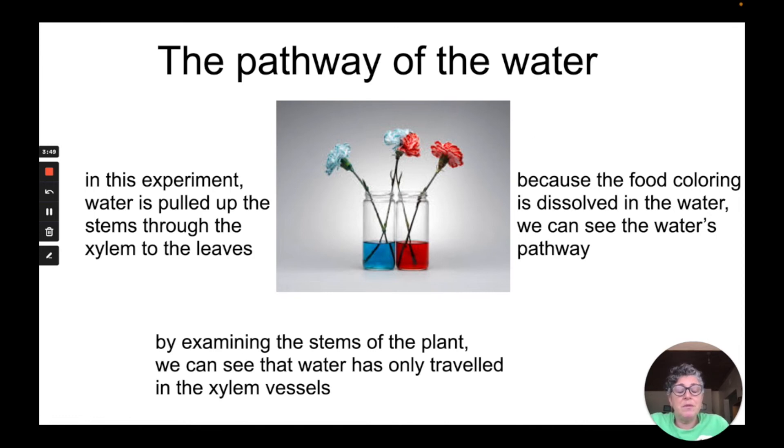By examining the stems of the plant we can see that water has only traveled in the xylem vessels. When you do this experiment you will see that the cortex and the other tissue of the stem are not dyed red or green or blue, whichever food coloring you use. It is only the xylem vessels within the vascular bundles that have the dye in it, and that tells us that water only travels in the xylem vessels.